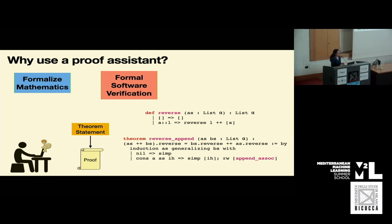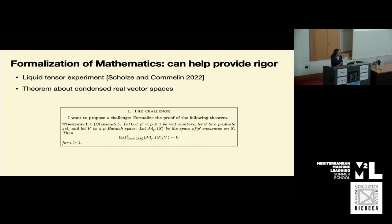Formalizing mathematics has gained some popularity among mathematicians in recent years as it can help provide more rigor to math. The proofs are easily checked, which can be incredibly difficult for humans to do on their own. A recent success story includes the liquid tensor experiment, where Schultz presented a challenge online to formalize a theorem about condensed real vector spaces. Much of undergraduate math has already been formalized in the Lean proof assistant in what's called the MathLib library.